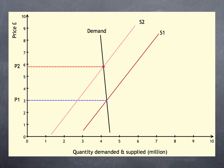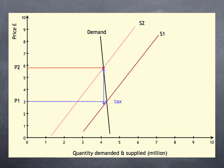Again, an indirect tax of £3 moves the supply curve upwards. The price rises, but not quite to £6. The supplier absorbs some of the tax rise.